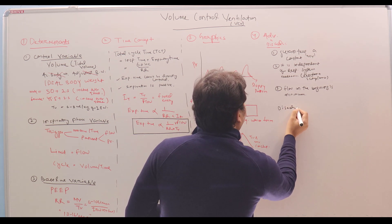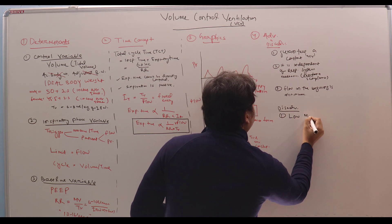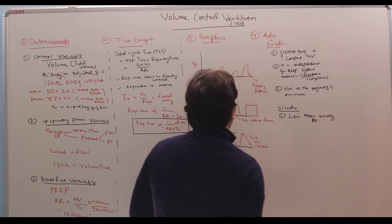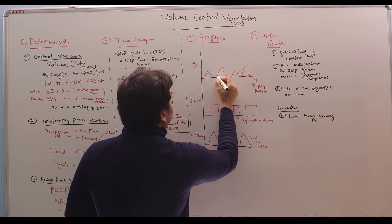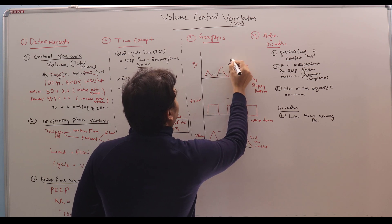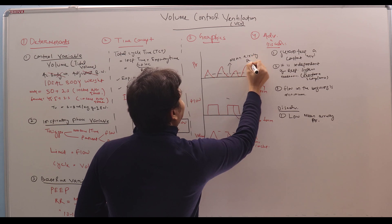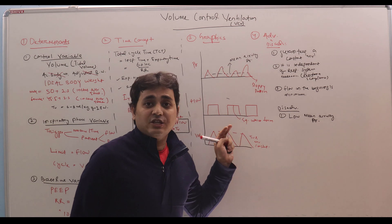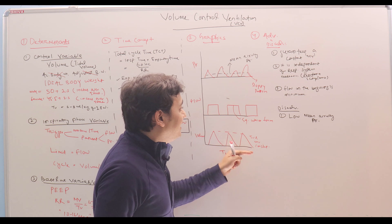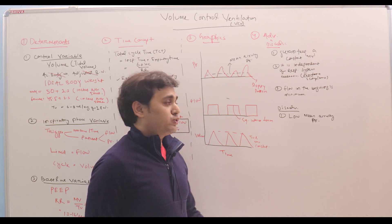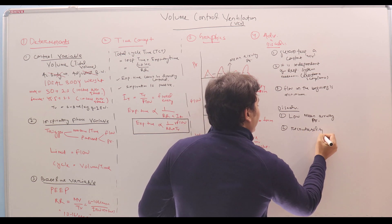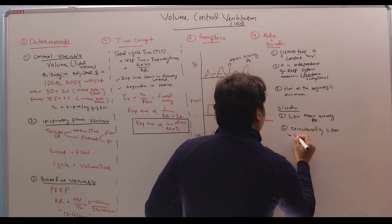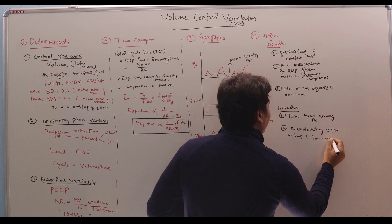What are the disadvantages? Low mean airway pressure. Since you can see, the pressure-time scalar is slopey. Pressure has different levels. It is not maintained at a constant level. So the average pressure will be low compared to pressure control ventilation. And it is the mean airway pressure that determines the oxygenation. So if our primary target is oxygenation, it may not be a good mode to start with.